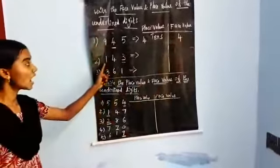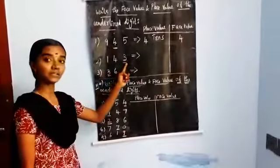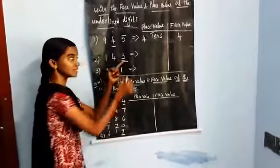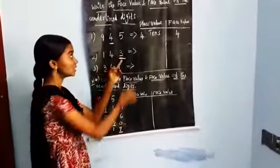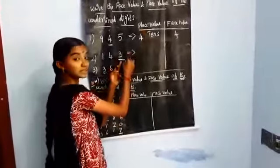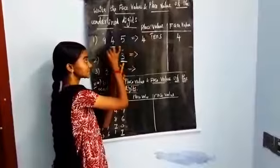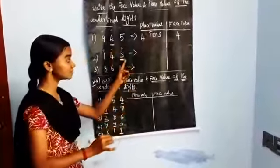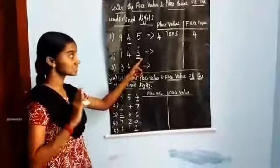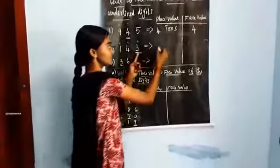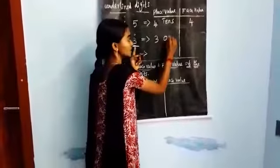Now look at 143. Which one is underlined? Yes, 3 is underlined. The places are 1s, 10s, 100s. The face value of 3 — yes, it is in the 1s place. So you write 3 ones. Face value is 3.